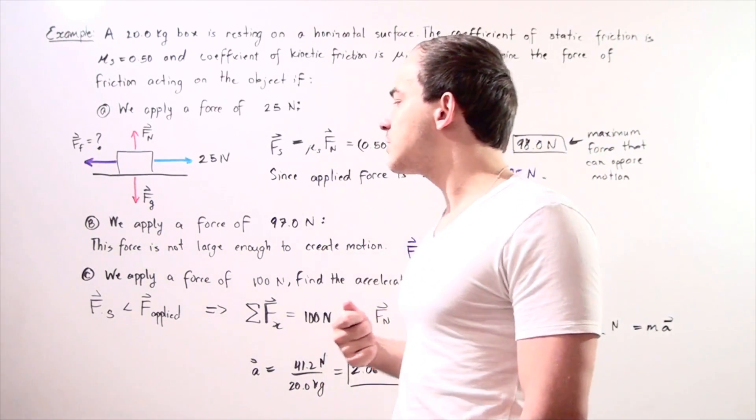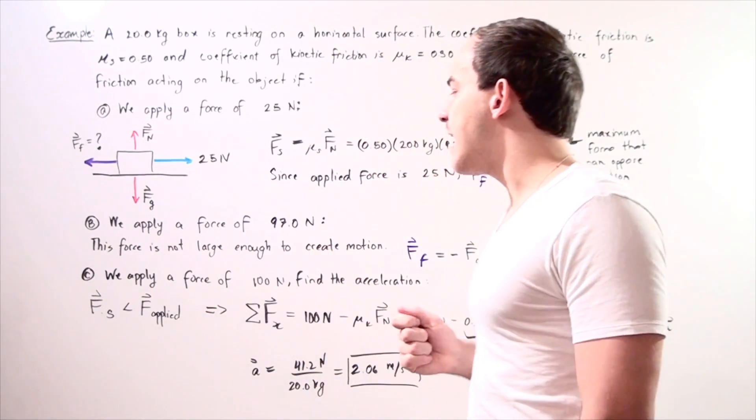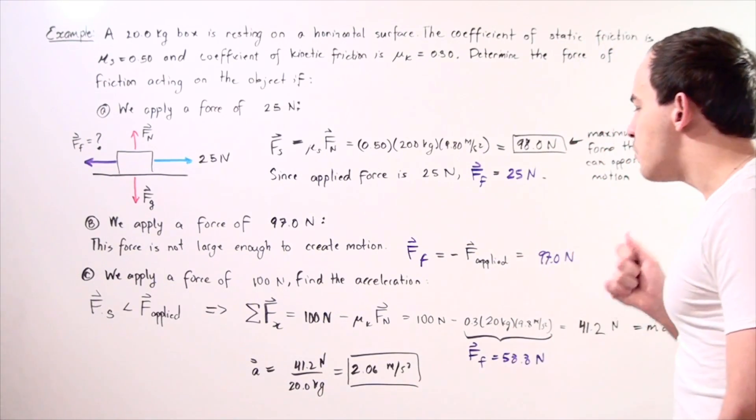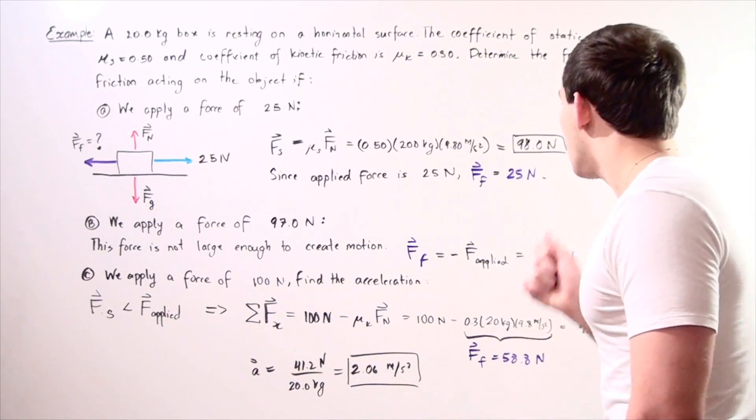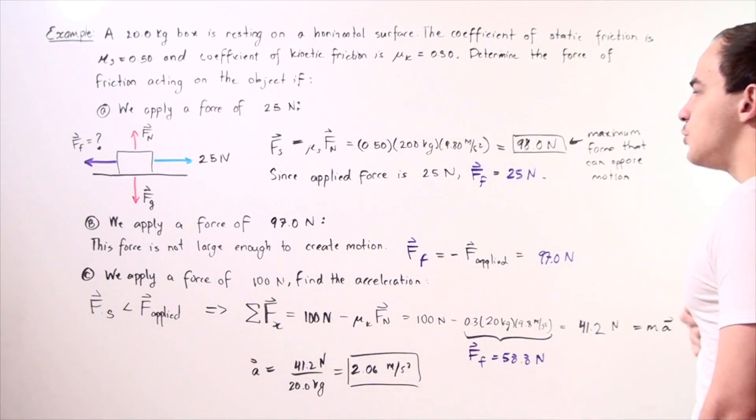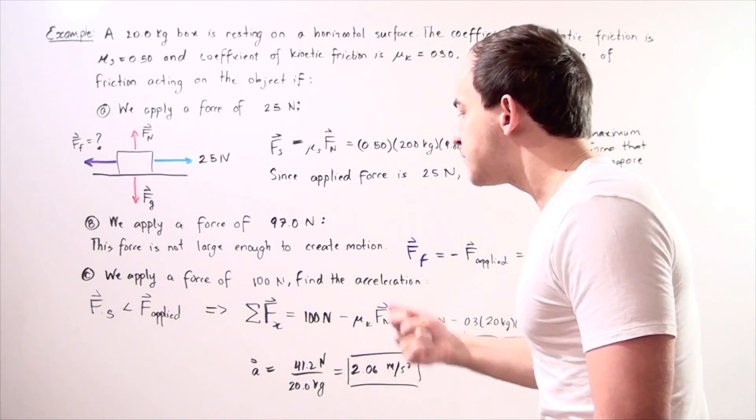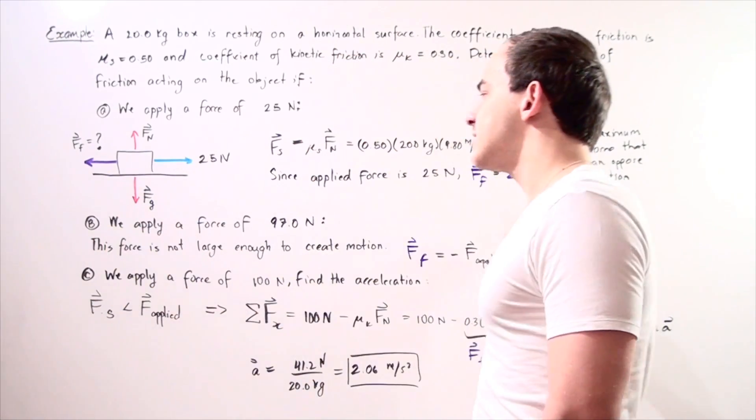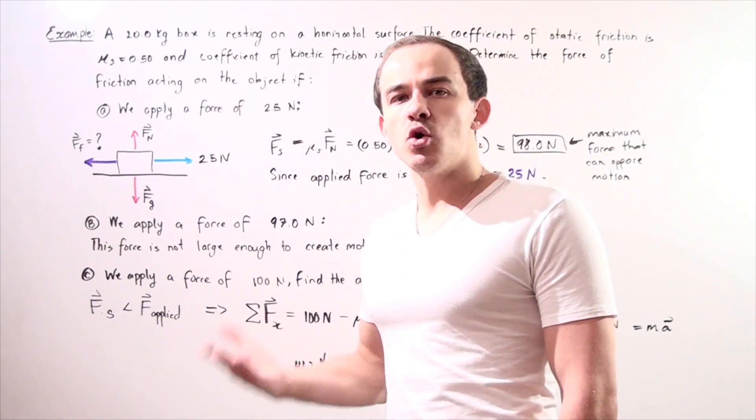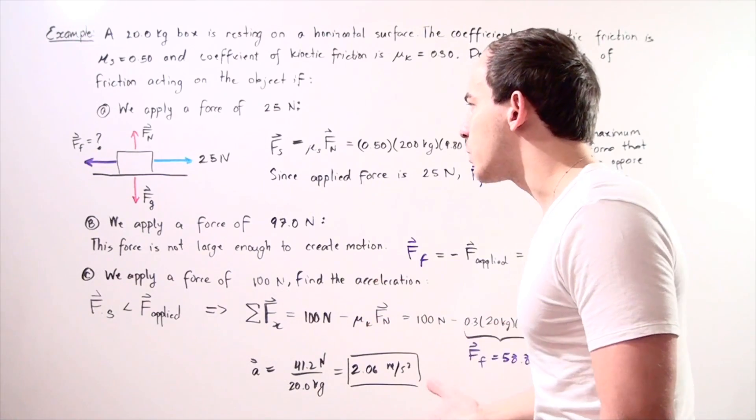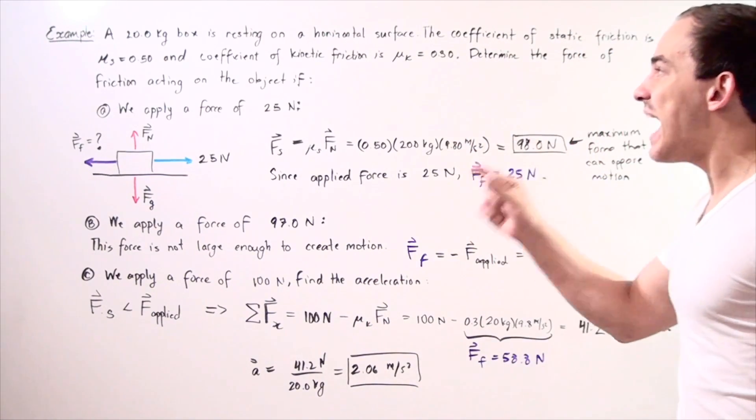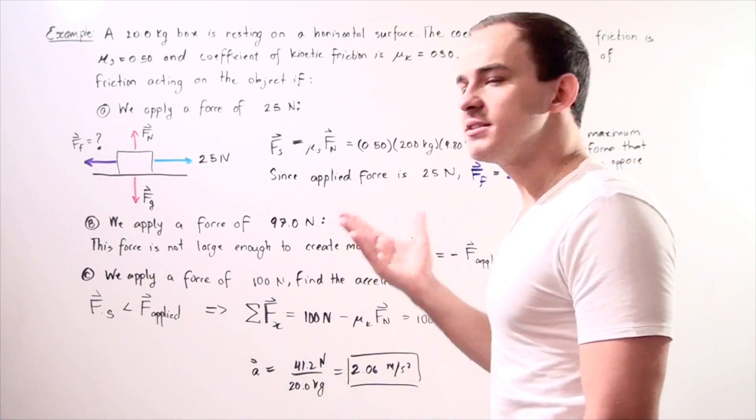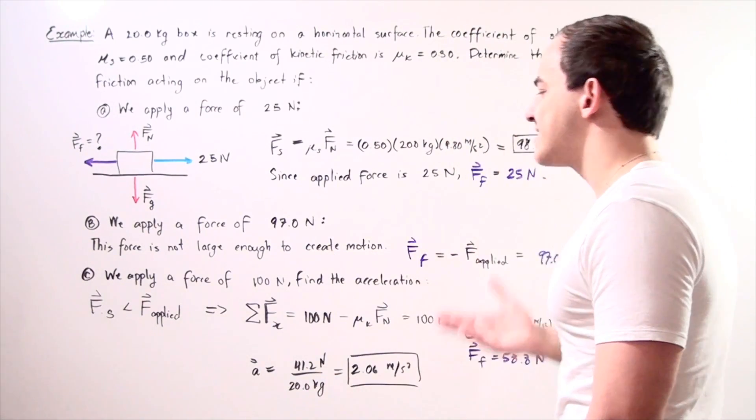What happens if we now apply a force of 100 newtons as in part C? Now, notice 100 newtons is larger than 98 newtons and that means this force of 100 newtons that we apply onto our box in the x direction will begin motion. Our object will accelerate and now static friction will become kinetic friction because our object is no longer stationary, our object is sliding.